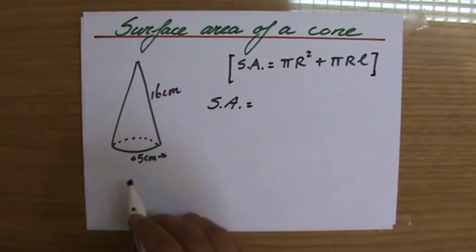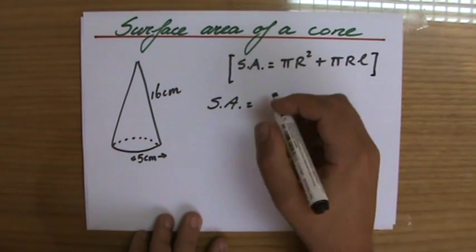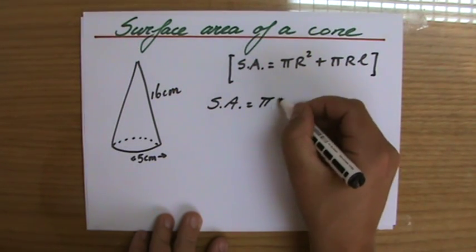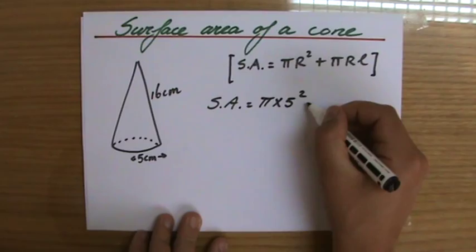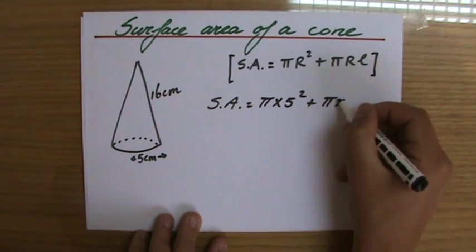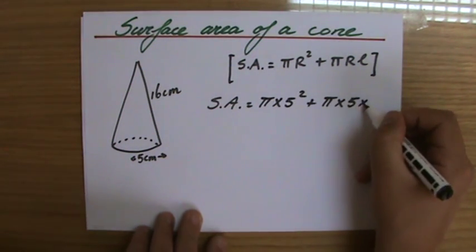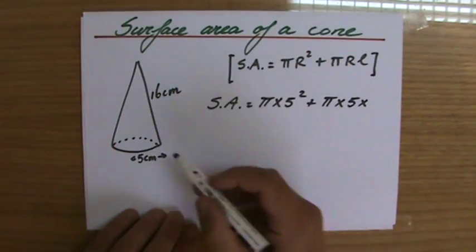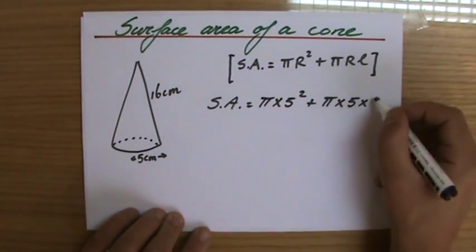So in this particular case pi r squared plus pi r L, the surface area equals, well, what is the radius of that base? That's 5 centimeters. So pi times 5 squared plus pi times the radius again, 5, times L, the slant height. So that's 16.